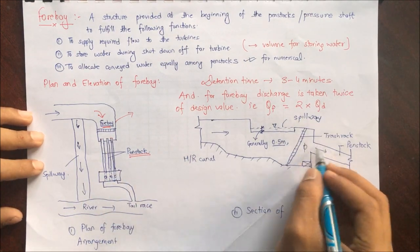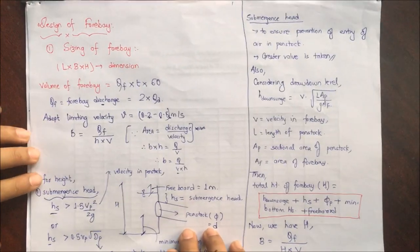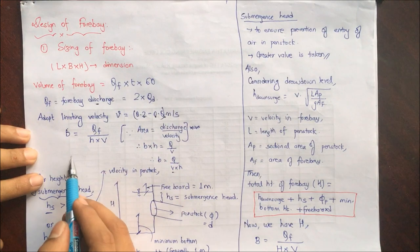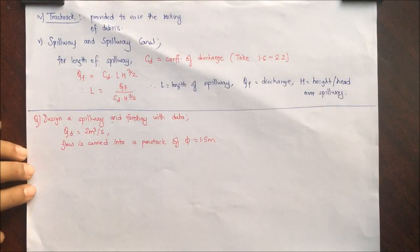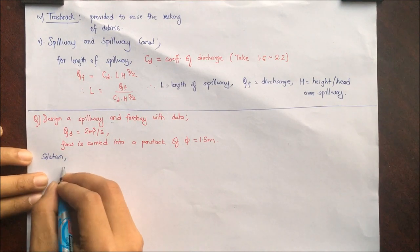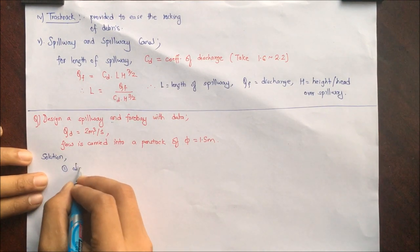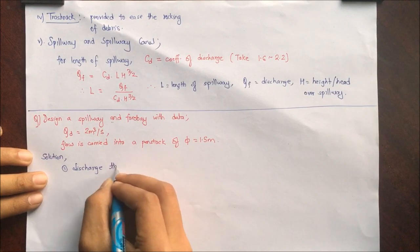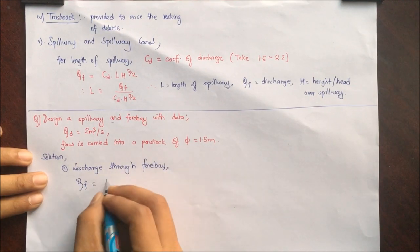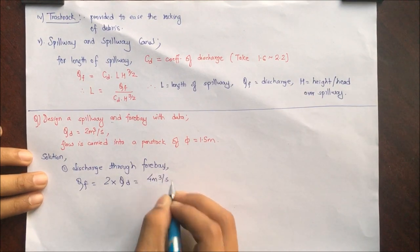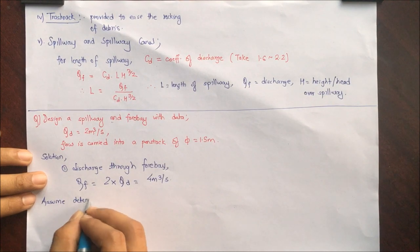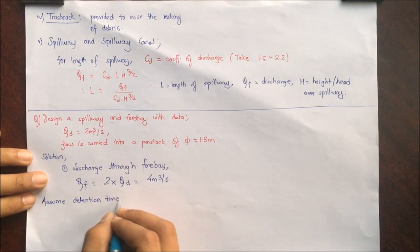The diameter has been provided, so these are the steps. As we know, sizing of forebay: Qf is equal to forebay discharge, that is 2 times of design discharge. The very first step we will be calculating is the discharge through the forebay: Qf = 2 × Qd, which comes as 4 meter cube per second. The question hasn't provided the detention time, so assuming detention time T = 3 minutes.